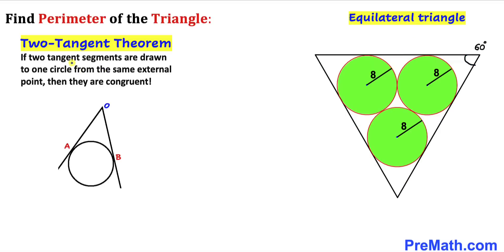Now let's recall the two tangent theorem. According to this theorem, if two tangent segments are drawn to one circle from the same external point, then they are congruent, as you can see in this diagram. So in our case, this line segment is congruent to this line segment — meaning this side length is equal to this side length.